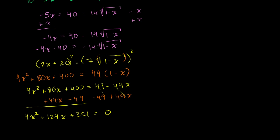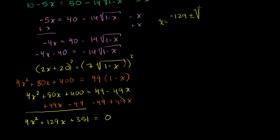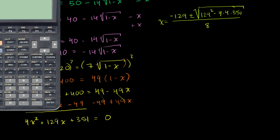These are strange-looking numbers, but using the quadratic formula: x equals negative 129 plus or minus the square root of 129² minus 4 times 4 times 351, all over 2 times 4, which is 8. We'll definitely need a calculator for this one.